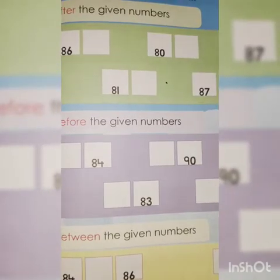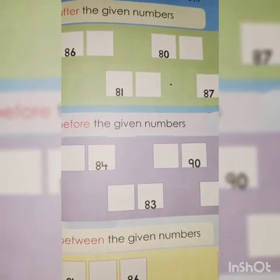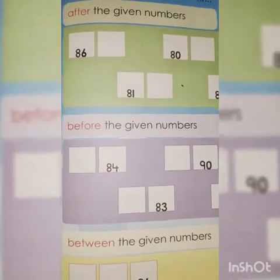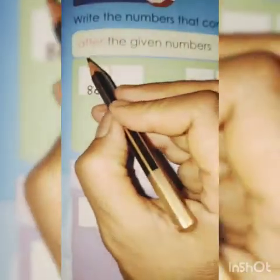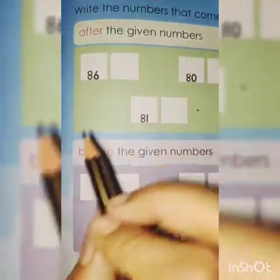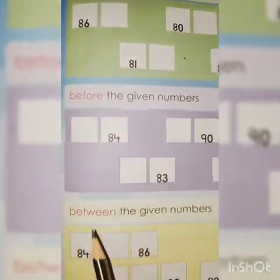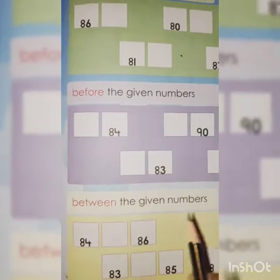Good morning kids. Today we are going to do book number 3, practice of addition and subtraction. Kids, take out your book number 3, page number 39. Today we will do after numbers, before numbers, between numbers.